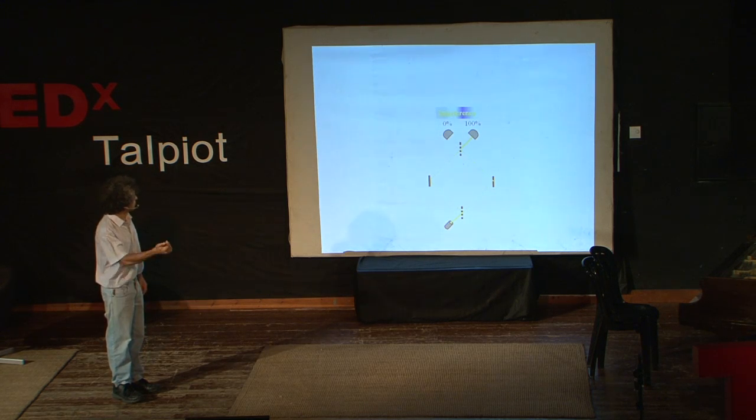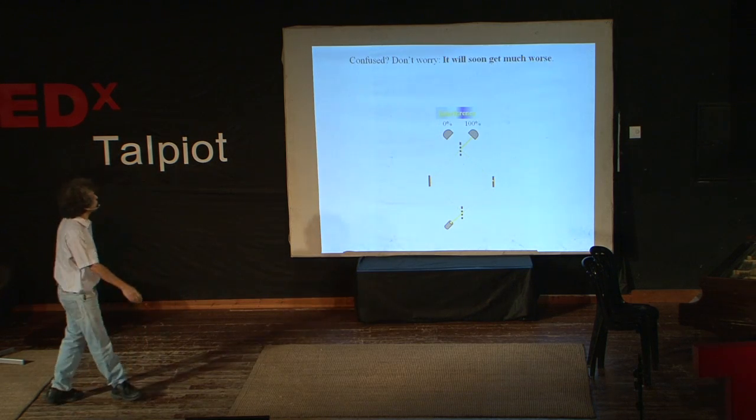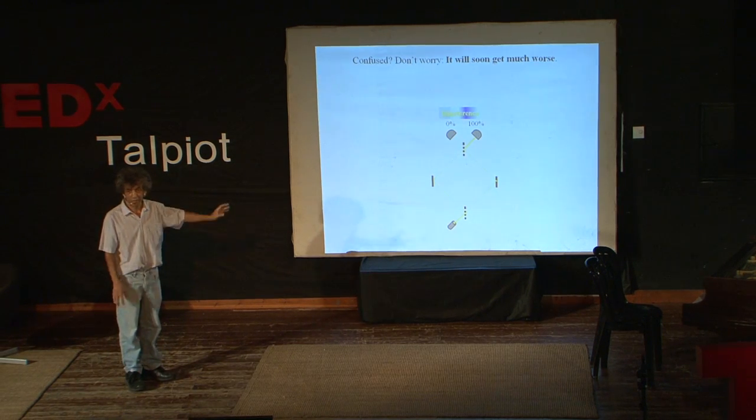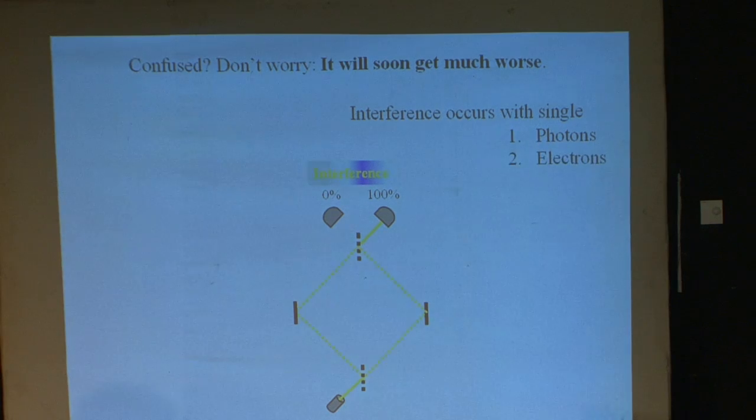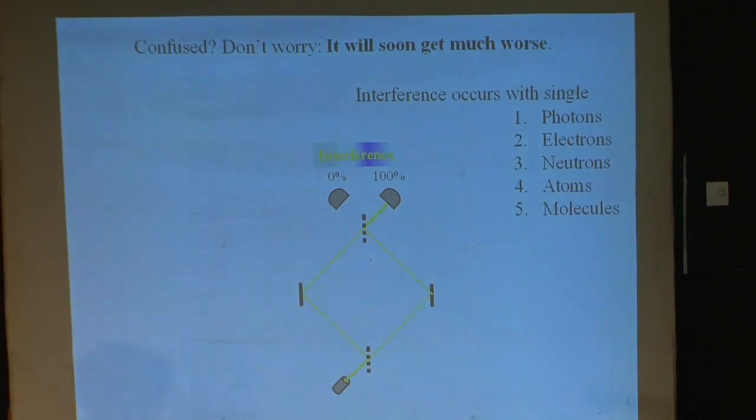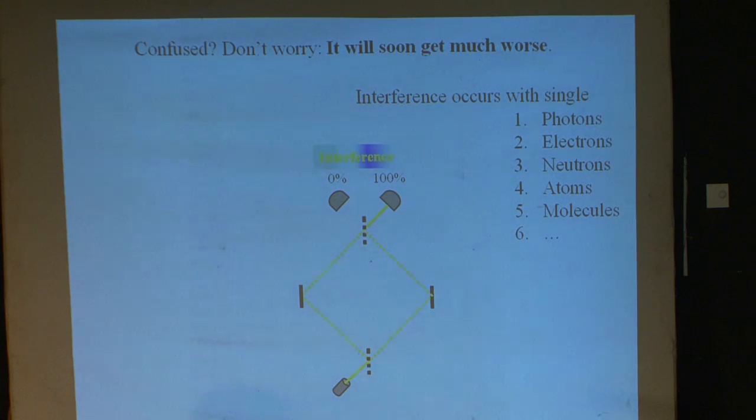So this is all very nice. If you are confused, don't worry, because soon it will turn out that the same thing that you see, something which is capable of going on both sides like a wave, or being detected in only one side as a particle, goes also with photons, single photons, single electrons, single neutrons, atoms, molecules, you name it. All those small things are subject to the same duality of waves and particles, which means that in some crazy way, they can go like a wave.